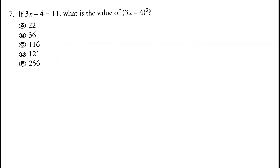Question 7: 3x minus 4 equals 11. Find the value of (3x minus 4) squared. Since 3x minus 4 equals 11, the answer is simply 11 squared, which is 121.